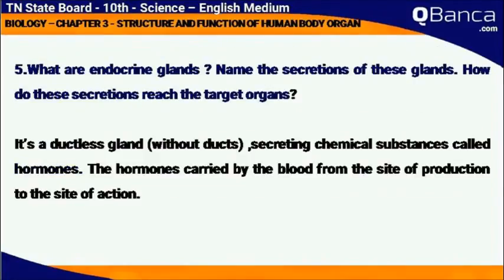What are endocrine glands? Endocrine glands are ductless glands. Their secretion is a chemical substance called hormones. Hormones are carried by the blood from the site of production to the site of action, reaching the target organ.